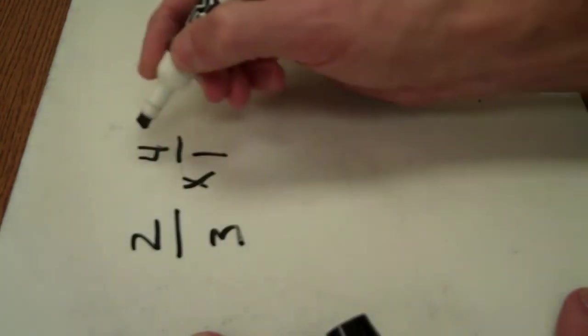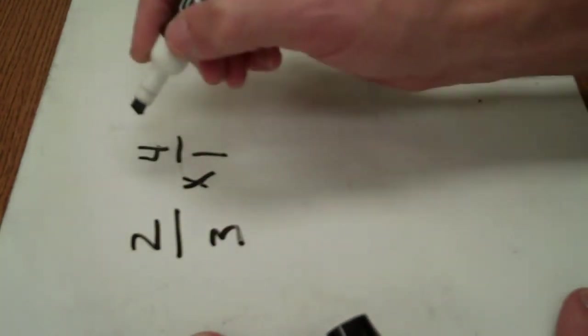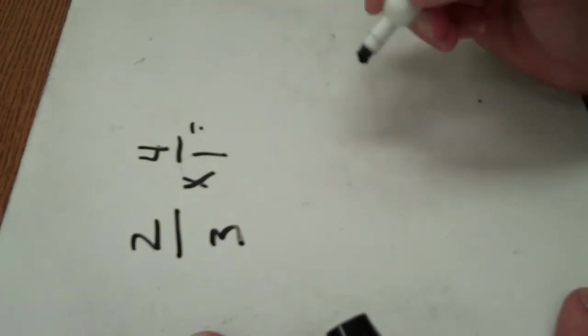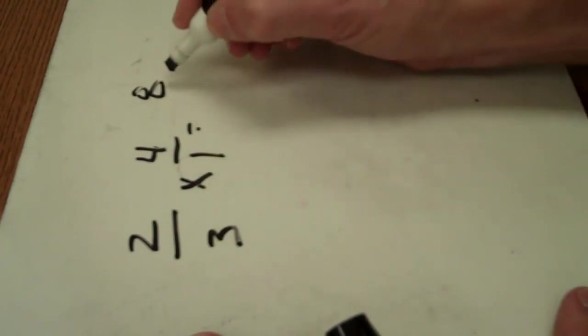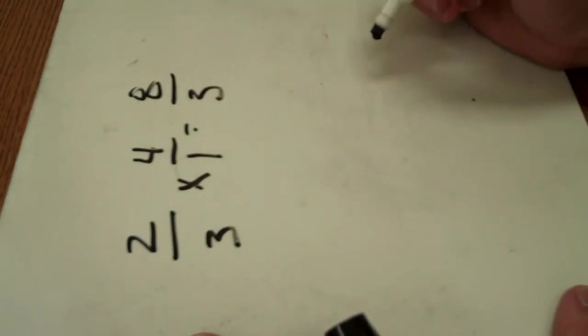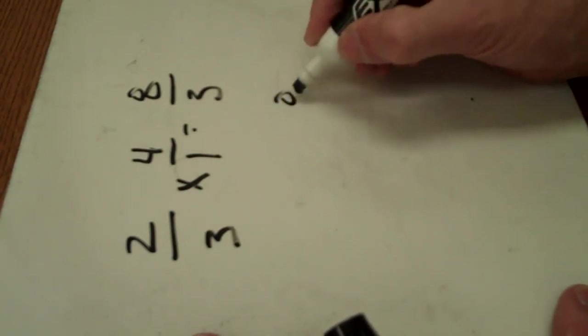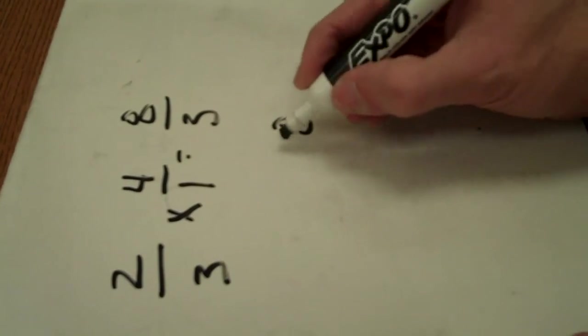Look for common factors. Diagonally, there's not. So, I just multiply straight across. 2 times 4 is 8. 3 times 1 is 3. Reading from top to bottom, that line means to divide. So, that's 8 divided by 3.